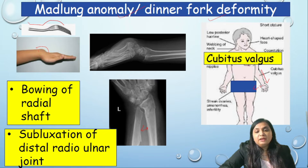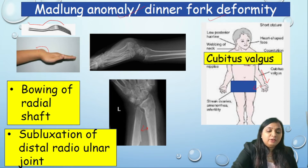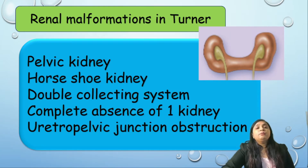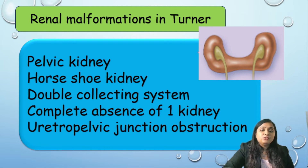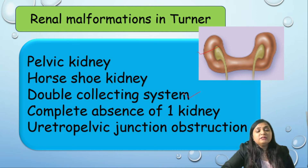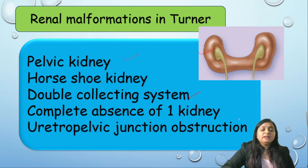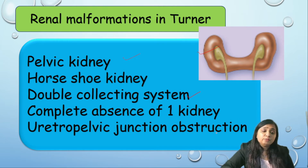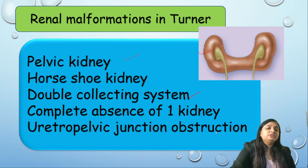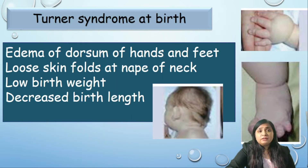Renal malformations associated with Turner syndrome: the most common is horseshoe kidney. The second most common renal deformity is a double collecting system. There could also be a pelvic kidney, complete absence of one kidney, or ureteropelvic junction obstruction.